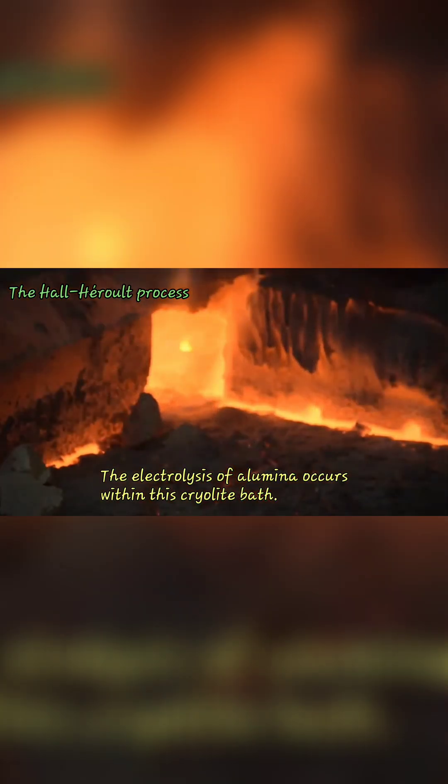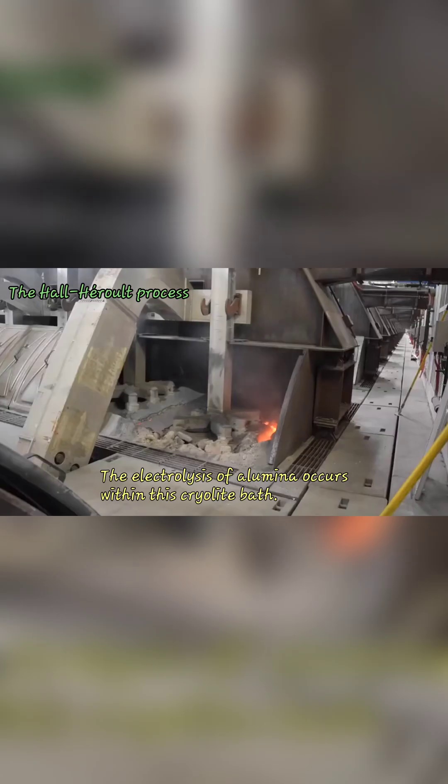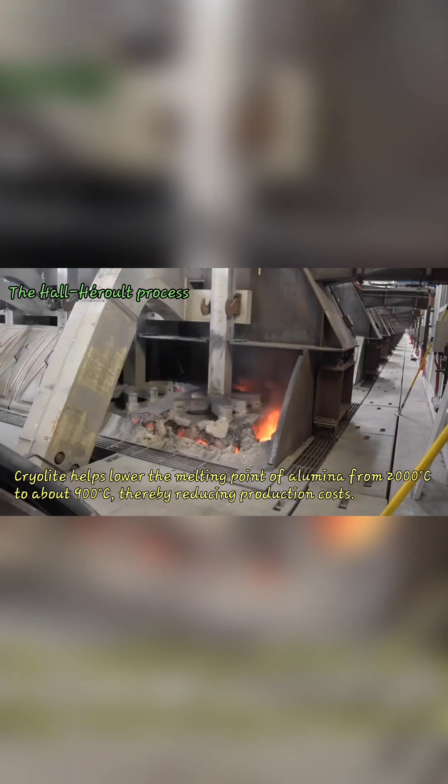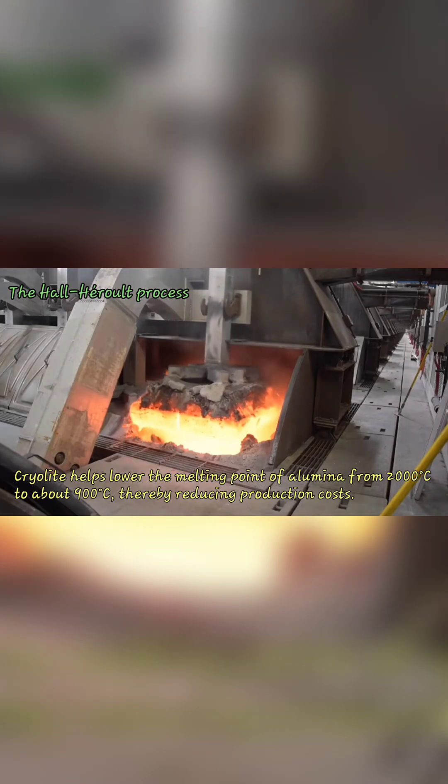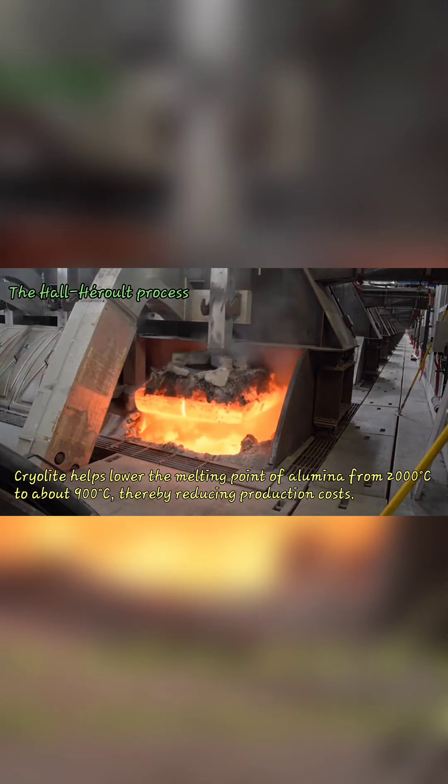The electrolysis of alumina occurs within this cryolite bath. Cryolite helps lower the melting point of alumina from 2000 degrees Celsius to about 900 degrees Celsius, thereby reducing production costs.